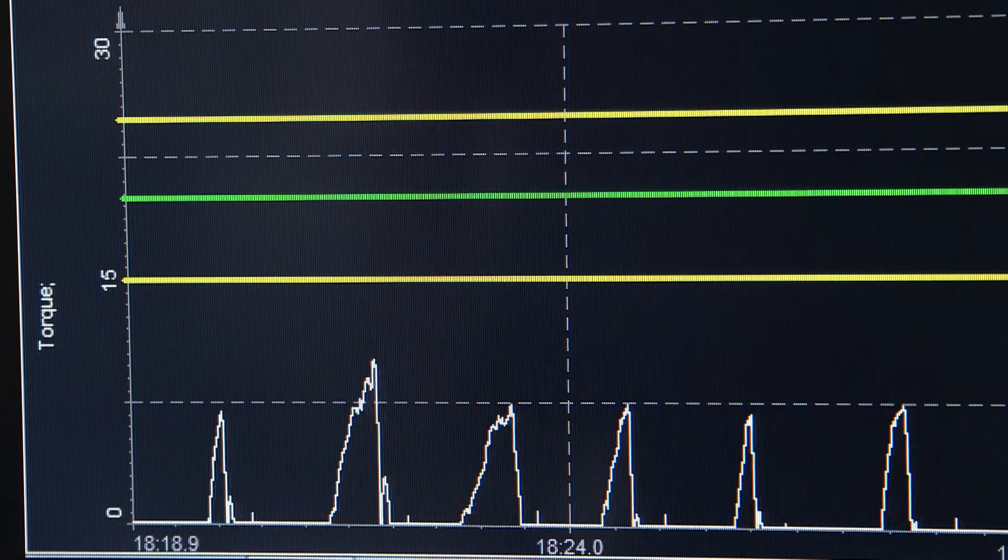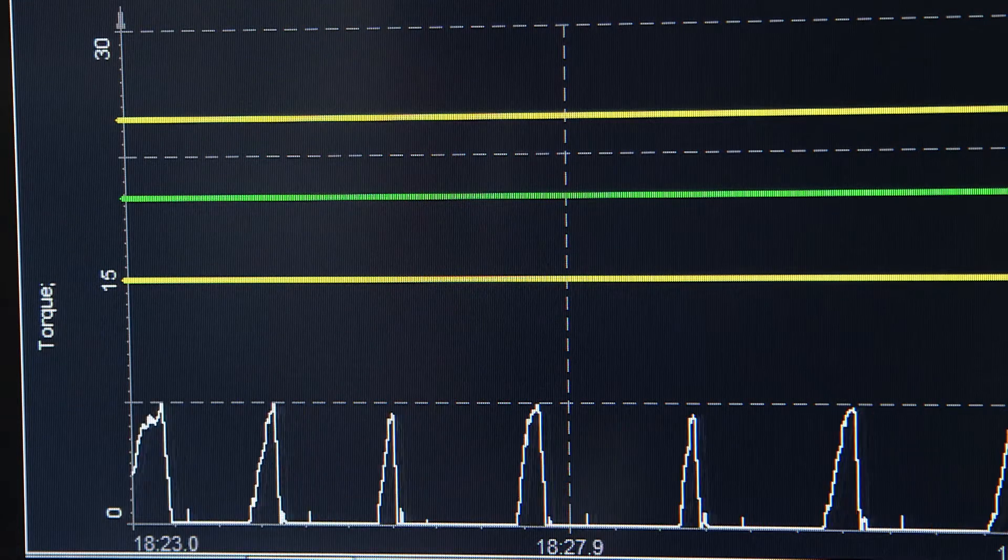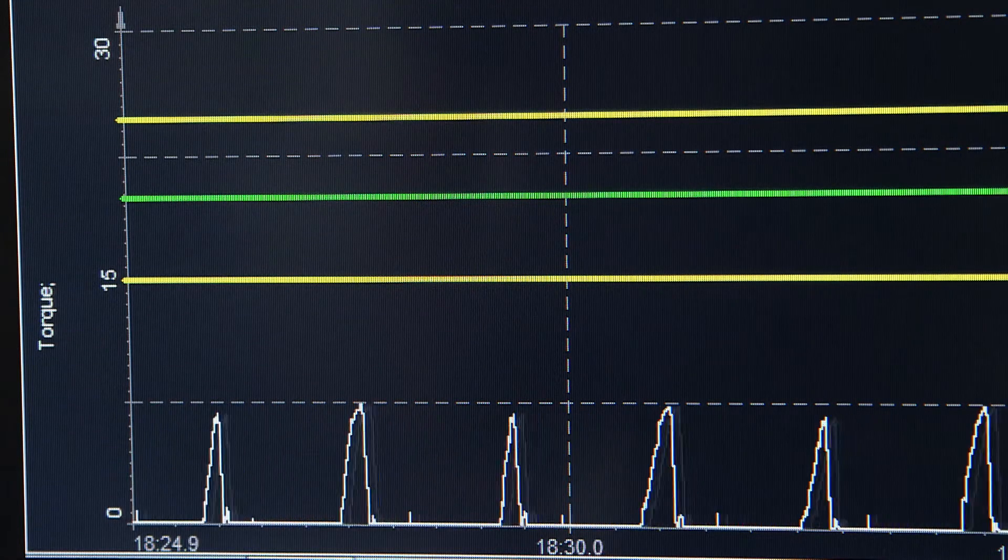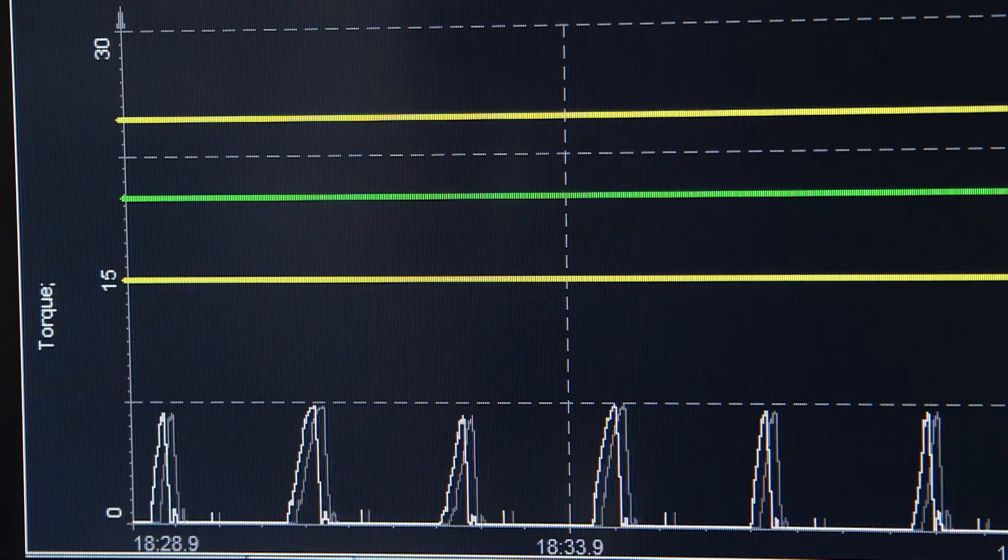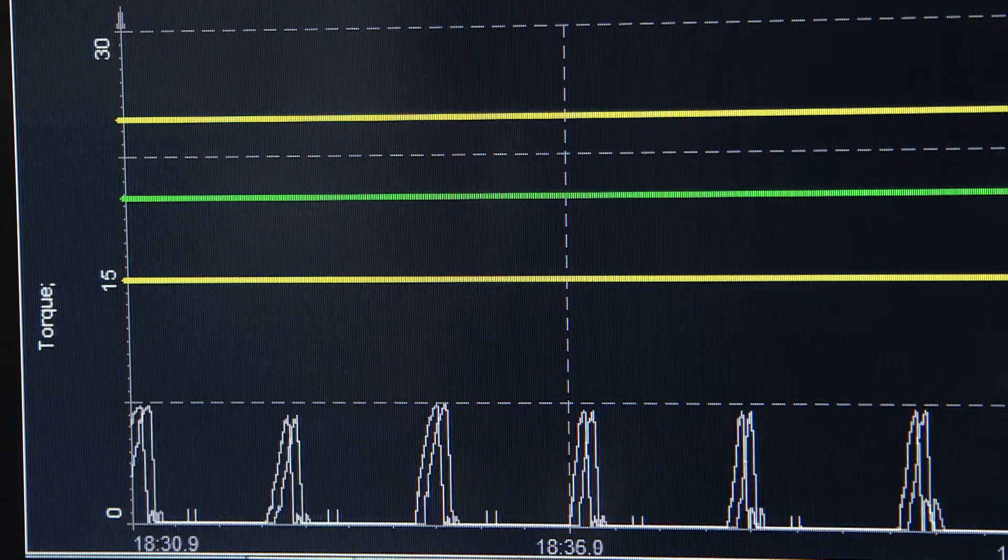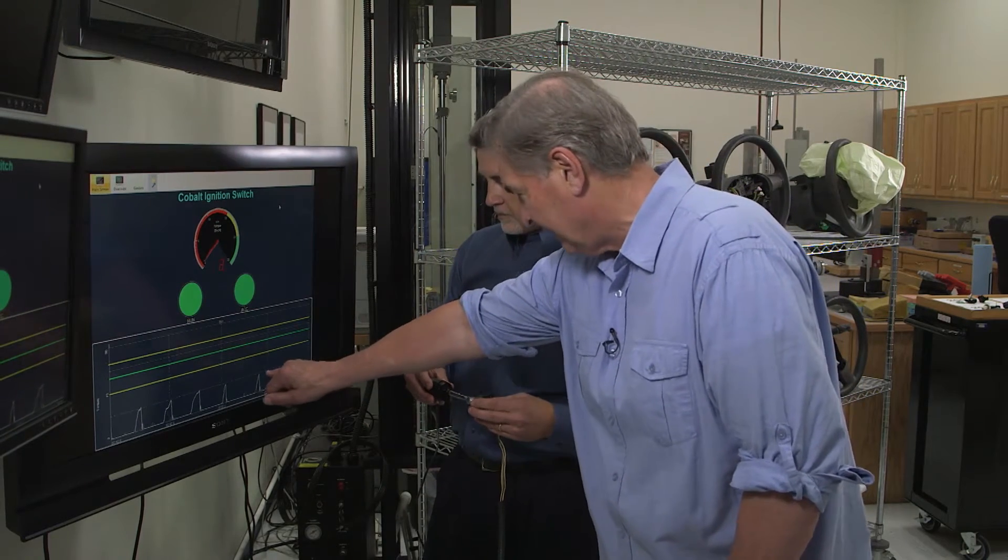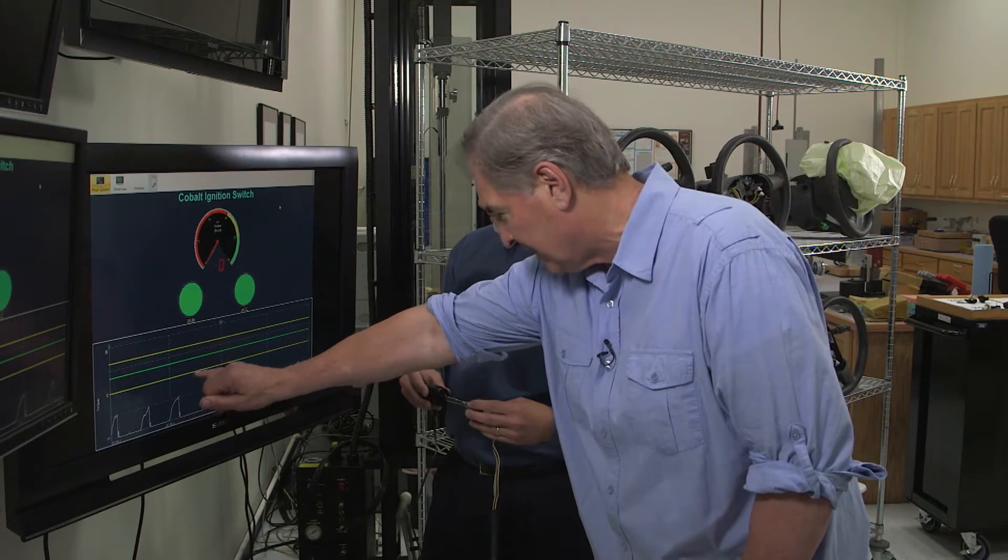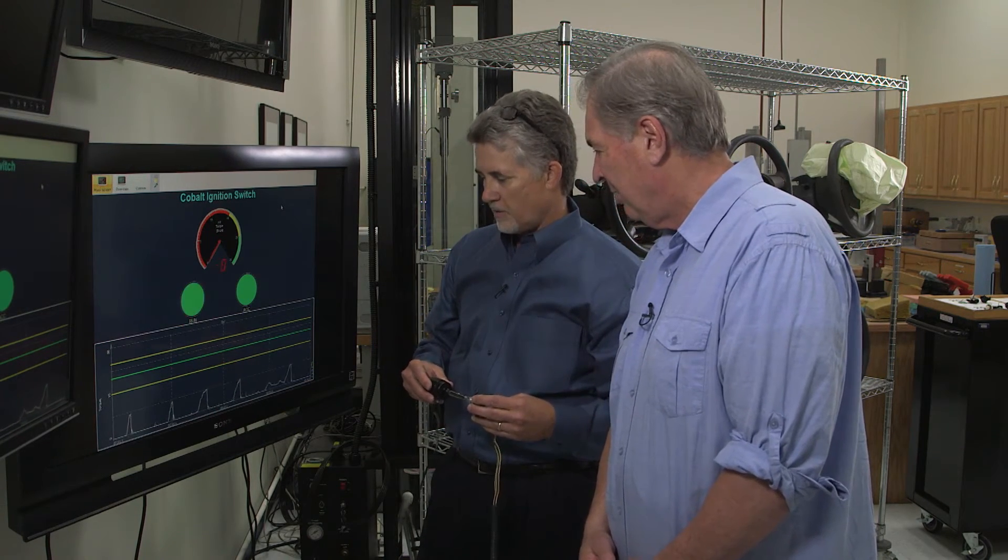So that's the torque in that original switch. The yellow line, the lower yellow line, would be 15 newton centimeters, which is the minimum torque specification for the switch. So we can see definitively, the torque in this original switch is about 50% less than it should be. It's about half, right at about 7.5 to 8 newton centimeters.